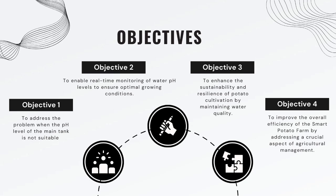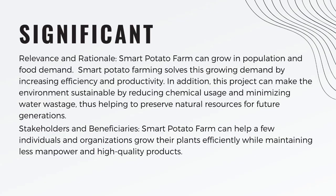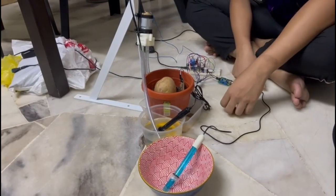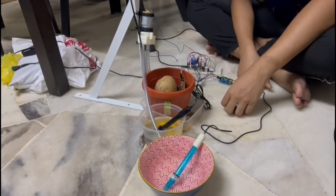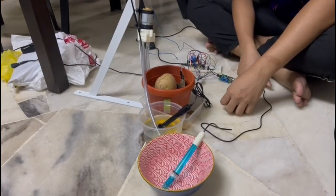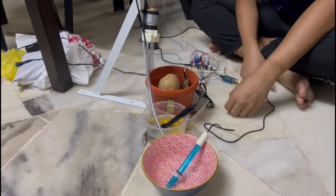The fourth objective is to improve the overall efficiency of the smart potato farm by addressing a crucial aspect of agricultural management. For significance and rationale, smart potato farming addresses growing population and food demand by increasing efficiency and productivity. It can help individuals and organizations grow their plants efficiently while maintaining less manpower and high quality products.